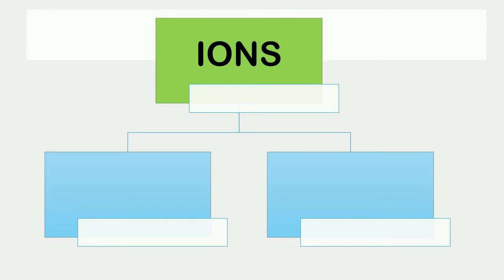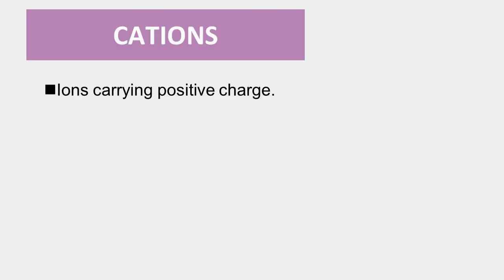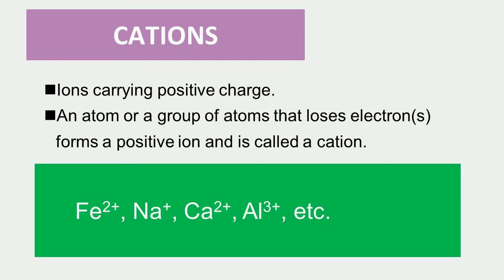Ions are classified into two types: cations and anions. Ions carrying positive charge are called cations. So we can say that an atom or a group of atoms that loses 1 or more electrons forms a positive ion and is called a cation. For example, Fe2+, Na+, Ca2+, Al3+, etc. are cations.